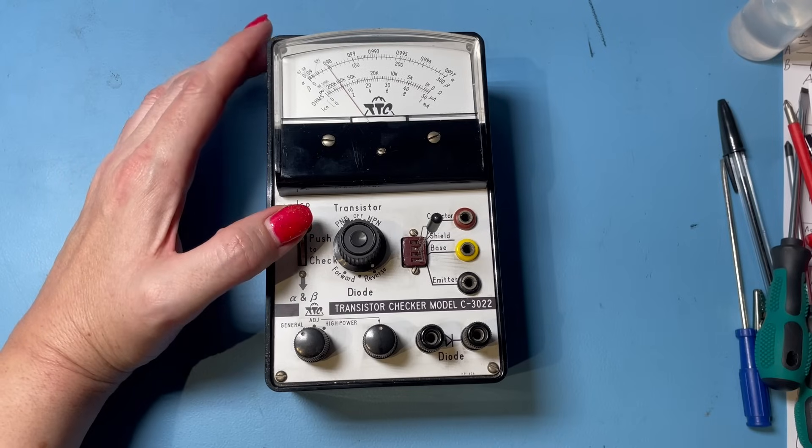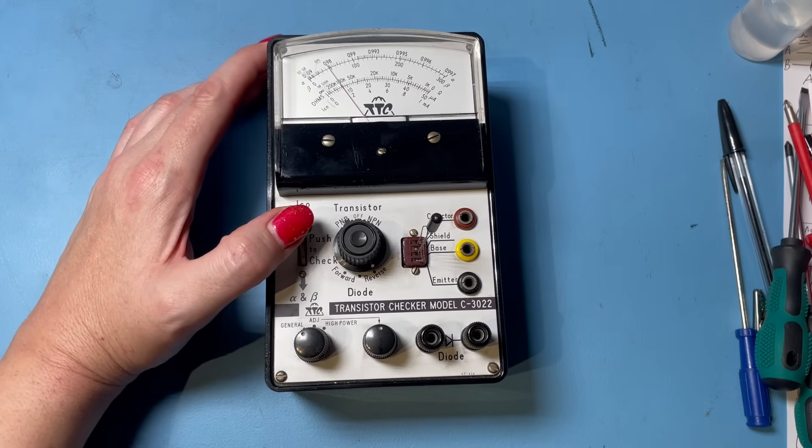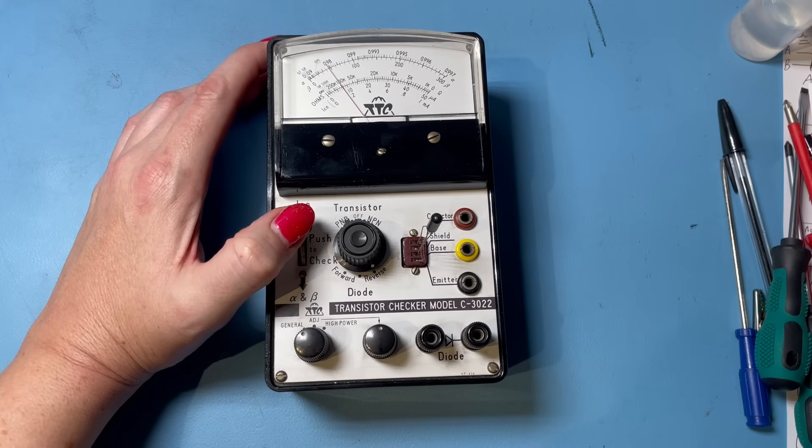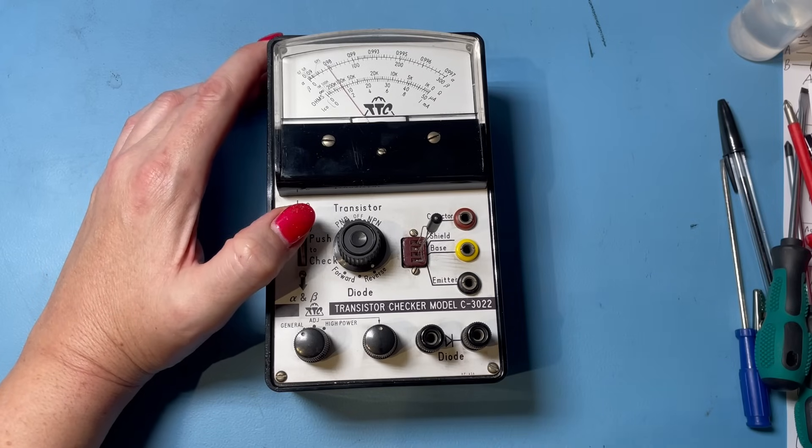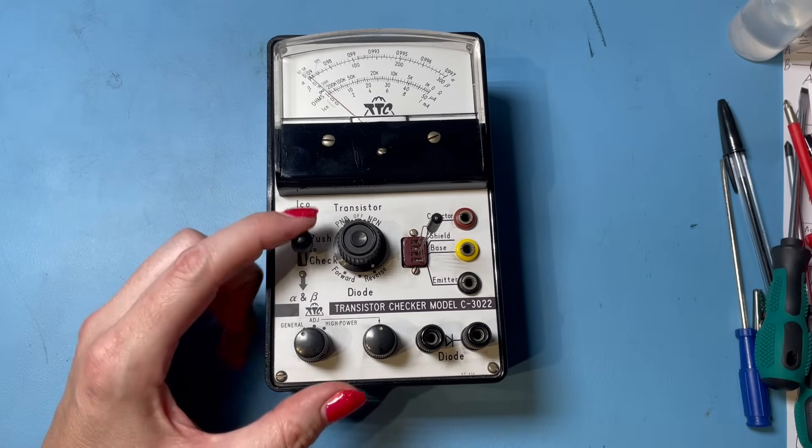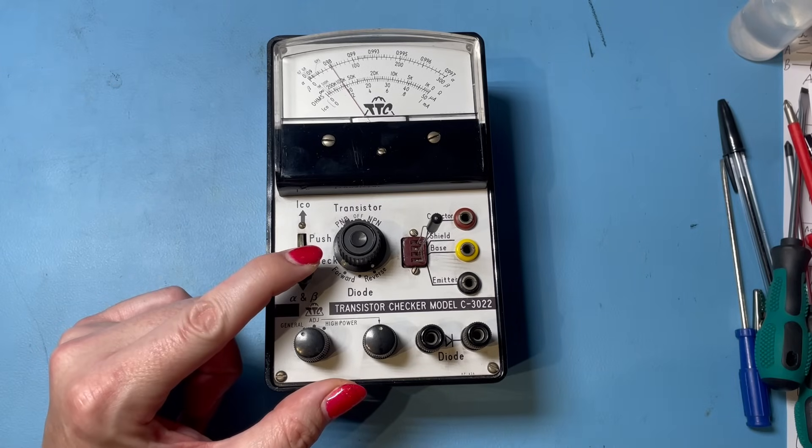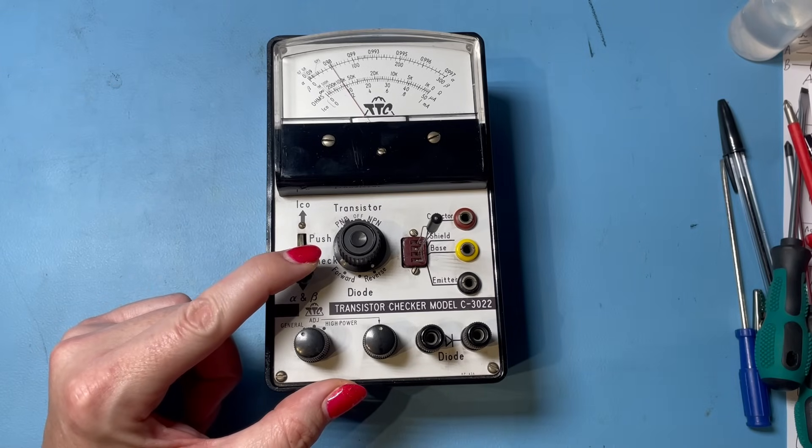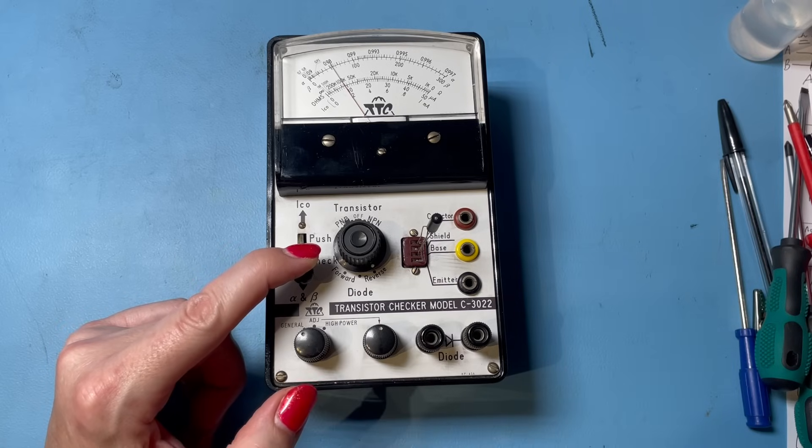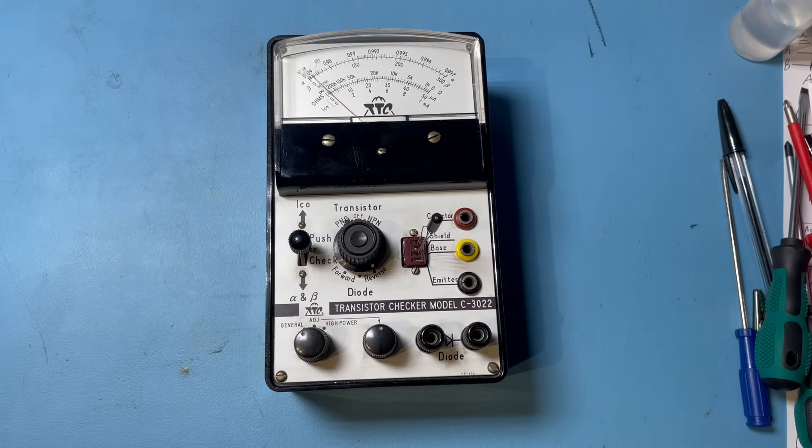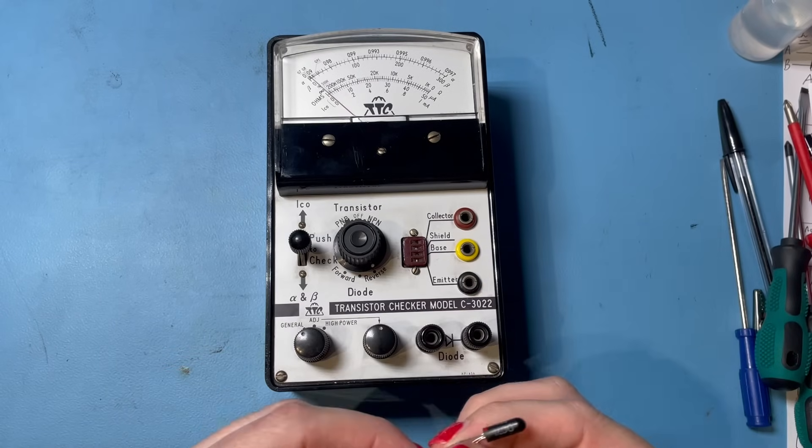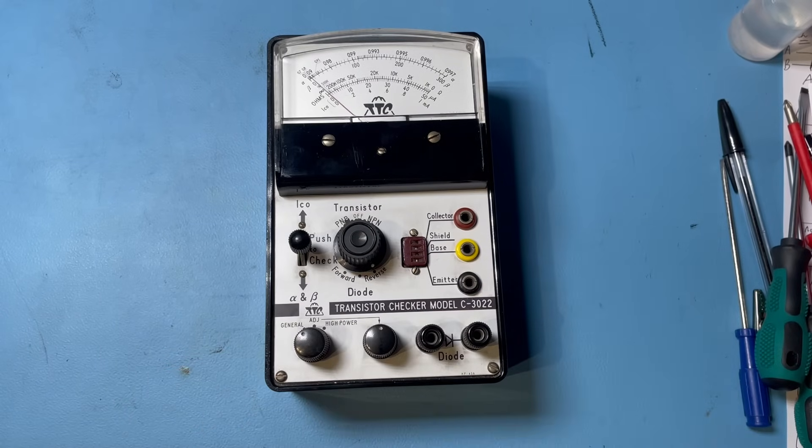Any leakage? Yes, there is. Not surprising for a germanium transistor. They're not going to be as good as a silicon one. So our leakage in this case, we're looking at 8 microamps. OK, and our alpha beta. There we go, 0.98 alpha beta is about 50. OK, there you go. So that's your germanium OC71 transistor.